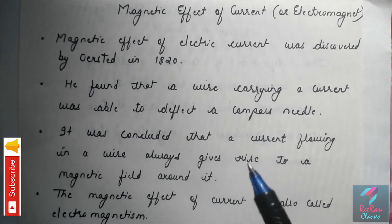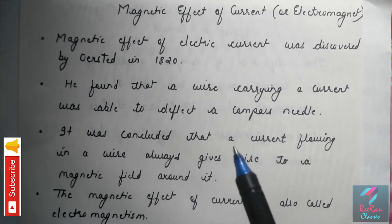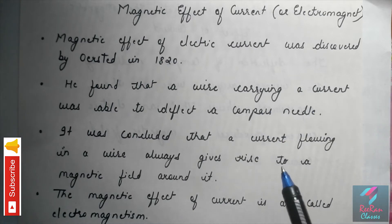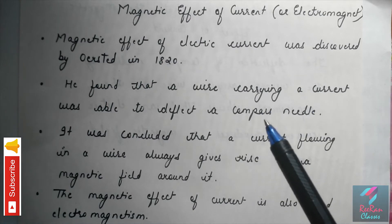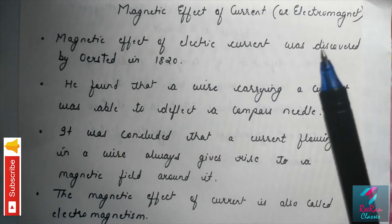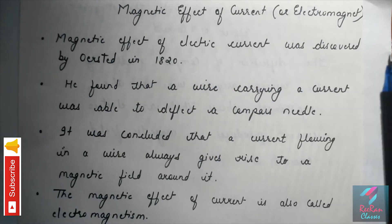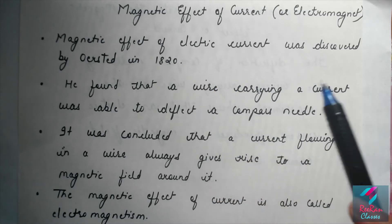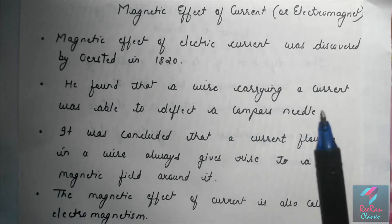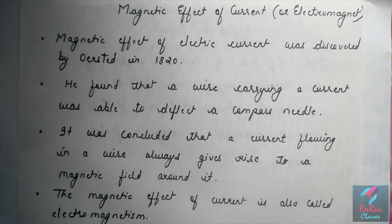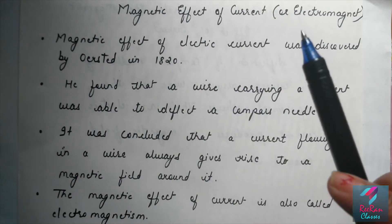In the previous lecture, we discussed about the experiment which shows that a bar magnet has a magnetic field which is represented by the magnetic field lines. Today we will discuss about the magnetic effect of electric current. Now we have got some basic ideas about a magnet and a magnetic field, and we can now start with the main topic of the lesson: the magnetic effect of electric current.